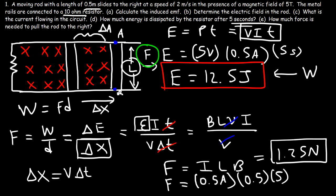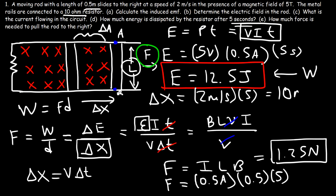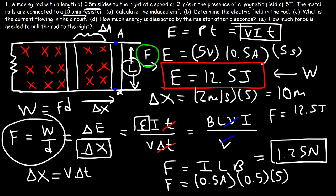That should be the answer. We can verify: delta x equals velocity 2 meters per second times time 5 seconds, giving a displacement of 10 meters. Using force equals work divided by displacement: 12.5 joules divided by 10 meters gives the same answer of 1.25 newtons. That's the force needed to pull the rod to the right.